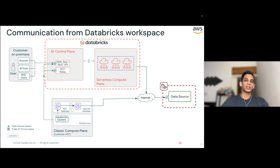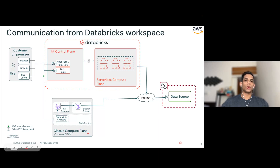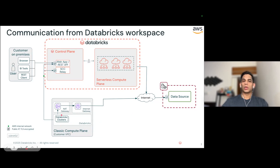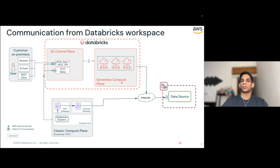All the complexities of the network infrastructure are abstracted away from you. Here's the problem statement: say you have a data source and your clusters need to connect to that data source, but the data source itself is protected by a firewall. In the classic compute plane, it's pretty straightforward — you find the VPC where your Databricks workspace is deployed, get the NAT gateway public IP, and whitelist it on the data source's firewall. The cluster communication goes from private subnets through the NAT gateway and Internet gateway to your data source, either over the internet or the AWS backbone network. But with serverless compute, it no longer sits in your VPC, so you don't really know what IPs to whitelist on the firewall. This is where NCC comes to the rescue.